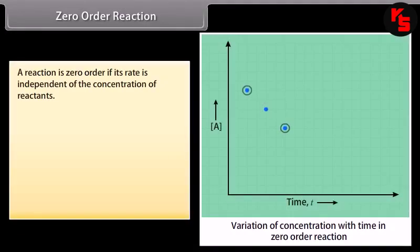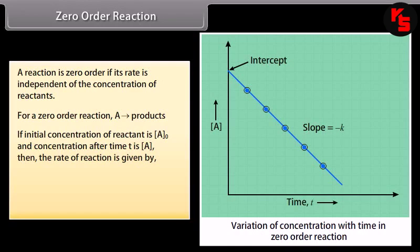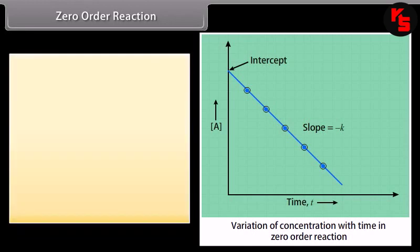A reaction is zero-order if its rate is independent of the concentration of reactants. For a zero-order reaction A → products, if initial concentration is A₀ and concentration at time T is A, then: −dA/dT = K[A]^0 = K. This can be written as dA = −K dT.